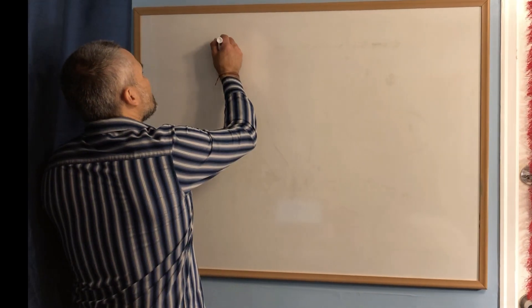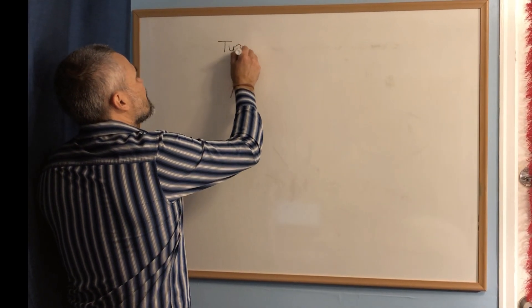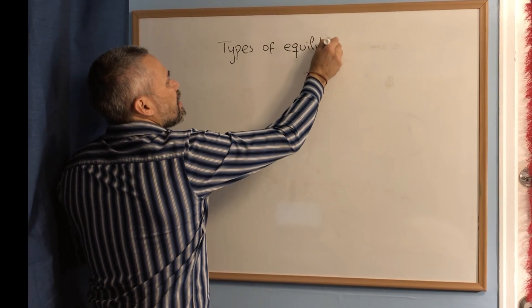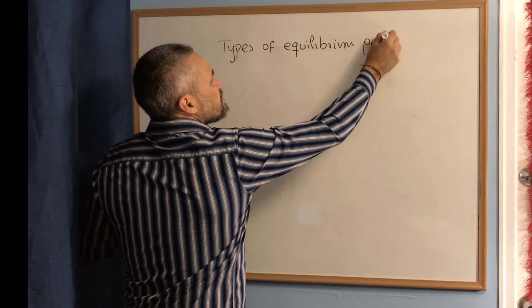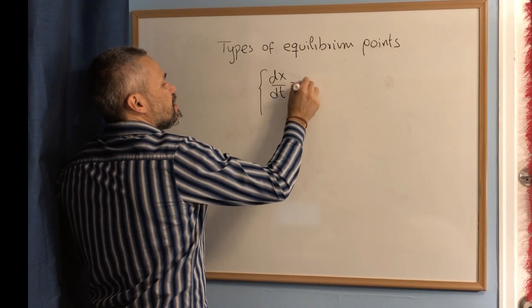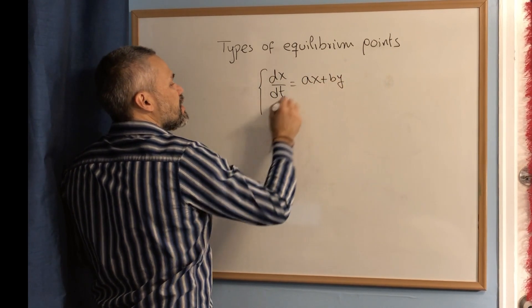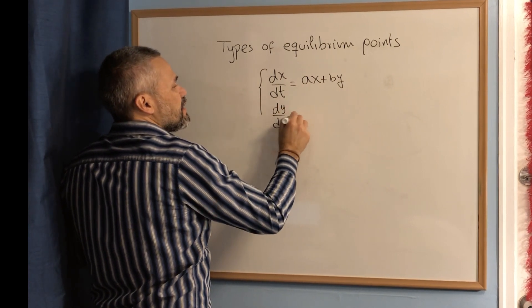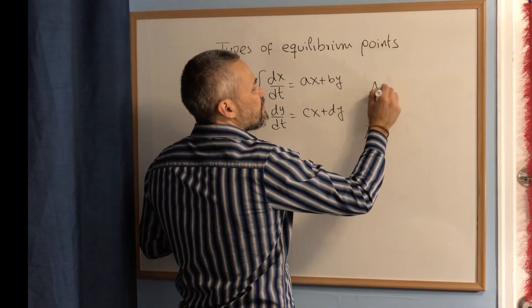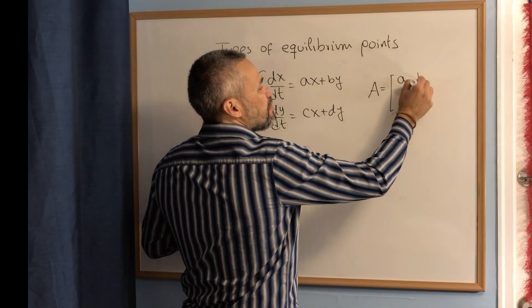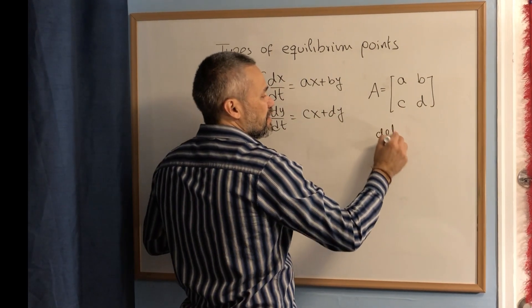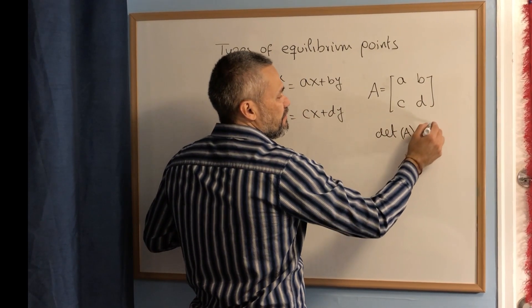The idea with this video is to explain the types of equilibrium points for a system that looks like dx/dt equals ax plus by and dy/dt equals cx plus dy. We're going to assume that the matrix A of the system — which is the matrix A, B, C, D — is invertible, meaning that the determinant of A is different from 0.